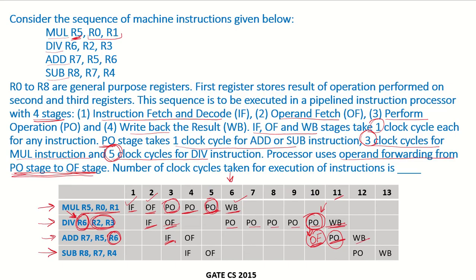Now comes the sub instruction. The destination of the add instruction, R7, is a source operand of the sub instruction — so again there is a data dependency. Starting with instruction fetch in clock cycle 4, when we reach the operand fetch stage the operand is not yet available, as it will only be available at the end of clock cycle 11. The operand is forwarded from the PO stage to the OF stage, and the perform operation can start in clock cycle 12. Since this is a sub instruction, perform operation requires only one clock cycle, followed by write back. The total number of clock cycles required is 13.